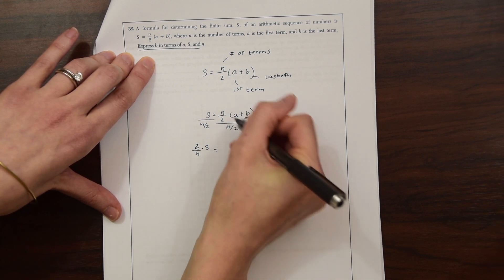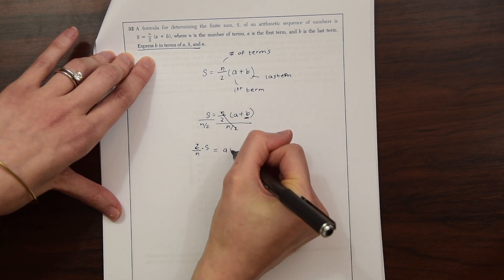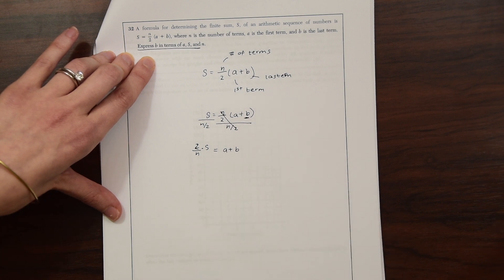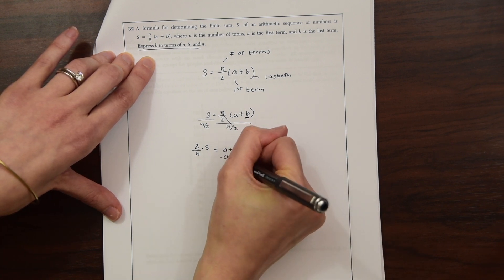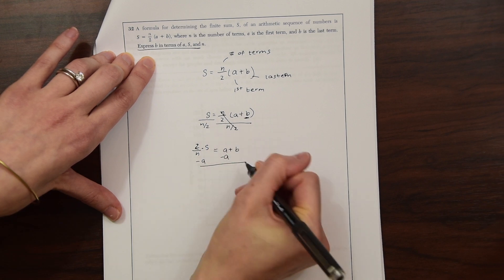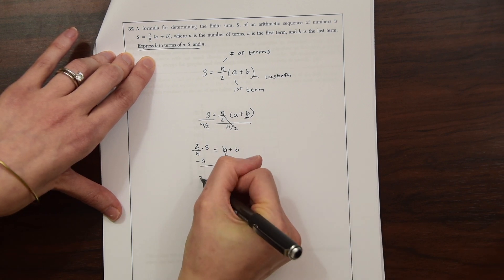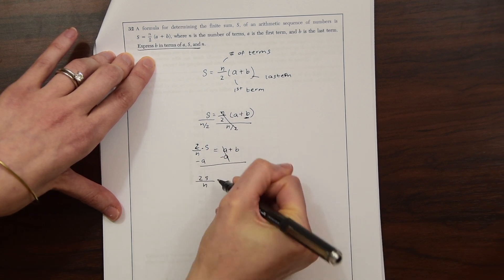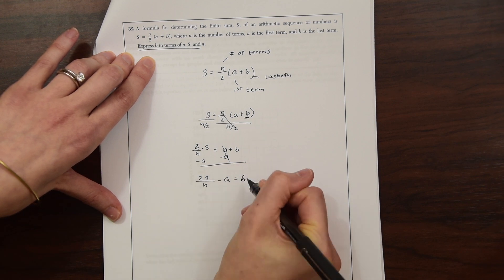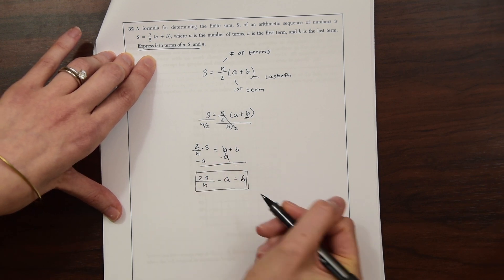Now that they're coming together, these cancel out. And we're left with a plus b. Now we just want to get b alone, so we're just going to subtract a from both sides. So that cancels out. And we're left with 2s over n minus a equals b. And that's our answer.